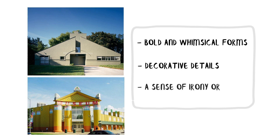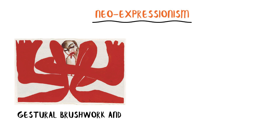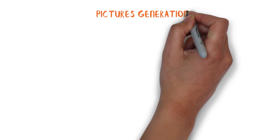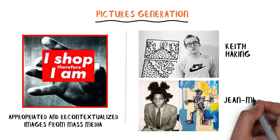In painting, the 1980s witnessed a diversification of styles and approaches. Neo-expressionism, characterized by gestural brushwork and emotive subject matter, gained popularity through artists like Julian Schnabel and Jean-Michel Basquiat. The 1980s also saw the emergence of the Pictures Generation, who appropriated and recontextualized images from mass media. Additionally, the rise of street art and graffiti, with artists such as Keith Haring and Jean-Michel Basquiat, brought a fresh and urban aesthetic to the art scene.